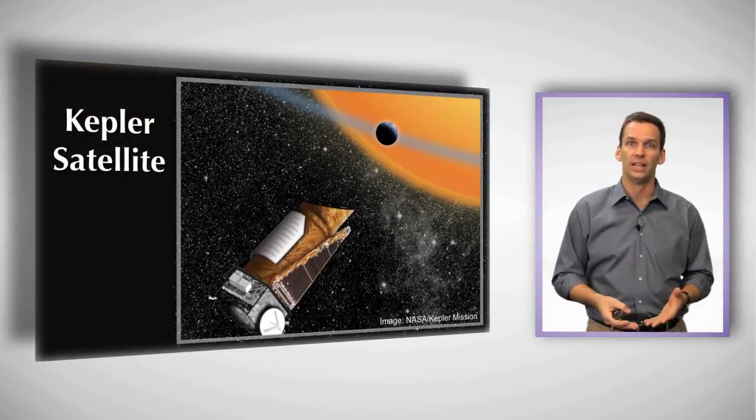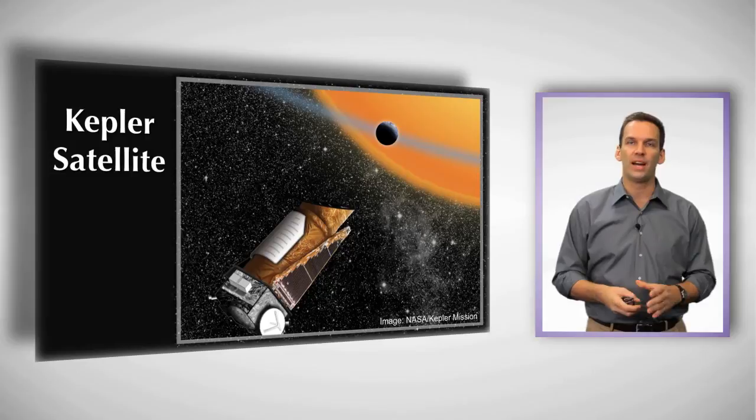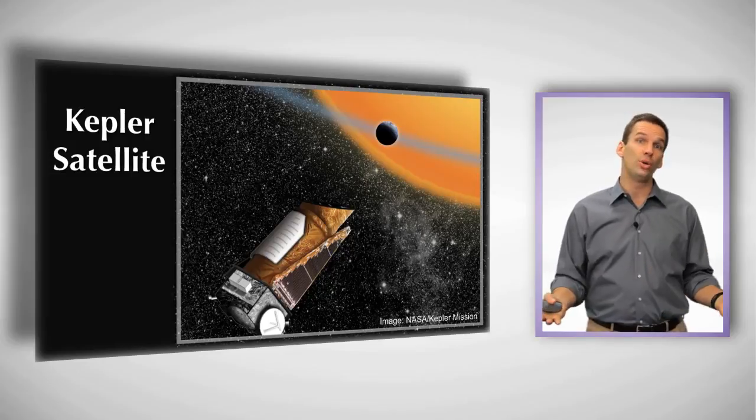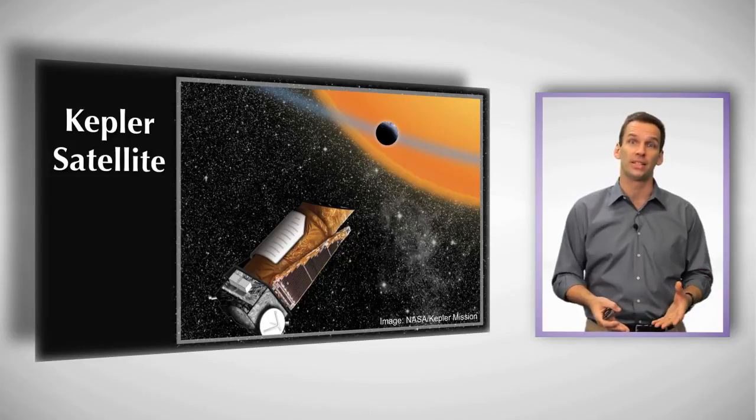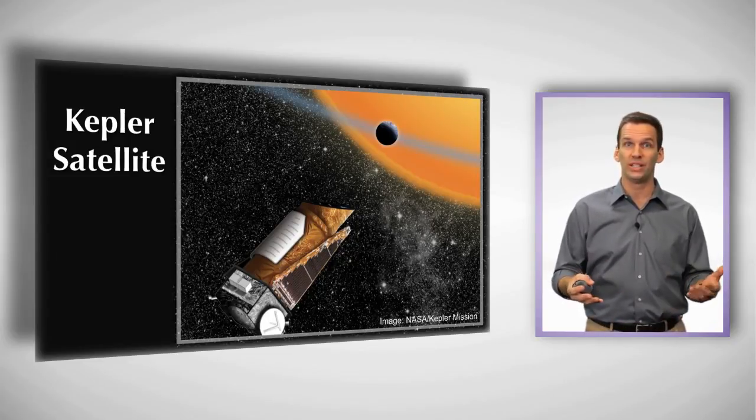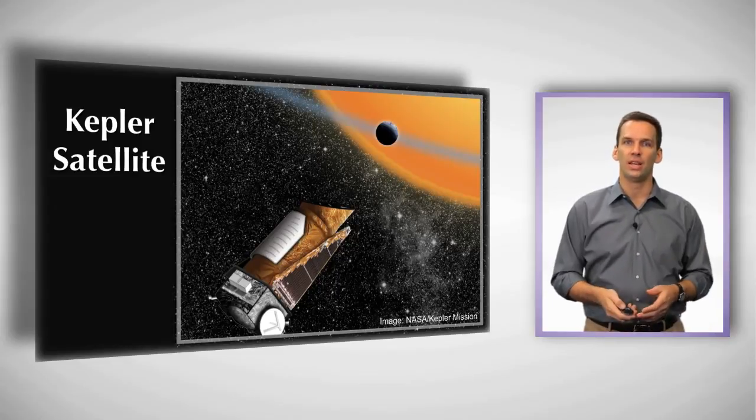Now the Kepler satellite, as of 2012, the start of 2012, had found more than 2,000 planetary candidates and they expect 80 to 90% of those to be actual planets themselves. So somewhere between 1,600 to 2,000 planets are being found using the transit technique by the Kepler satellite.